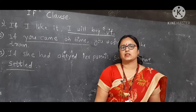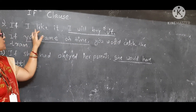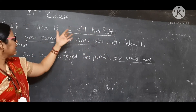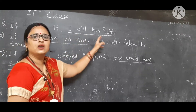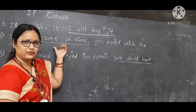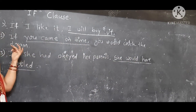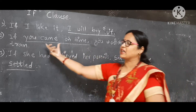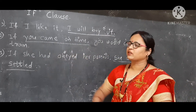Let's see the examples. In the first example, 'If I like it, ___.' The subordinate clause is in simple present tense, so by following the rules we can write: 'If I like it, I will buy it.' In the second example, a blank is given before 'you would catch the train.' We have to fill that blank. According to the main clause using 'would,' we write: 'If you came on time, you would catch the train' — because 'came' is simple past tense.